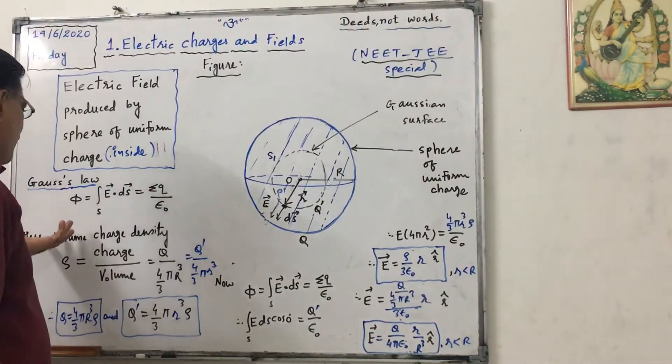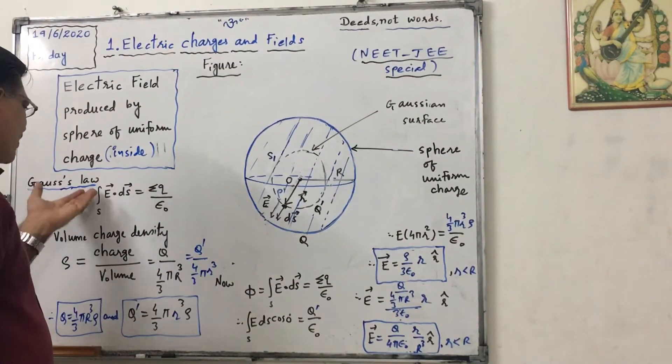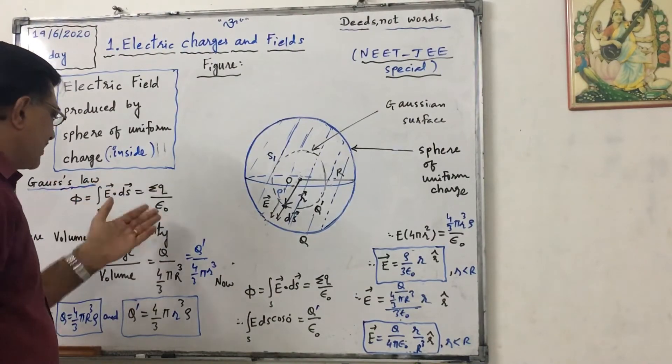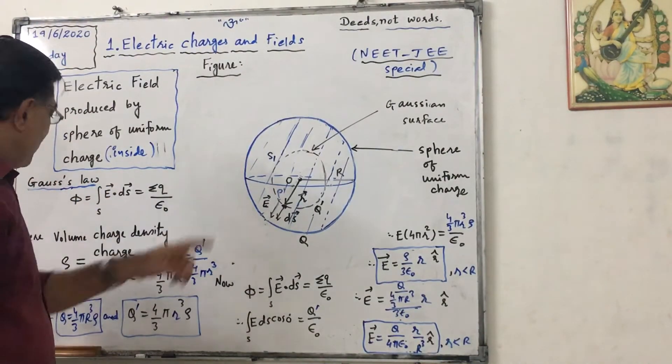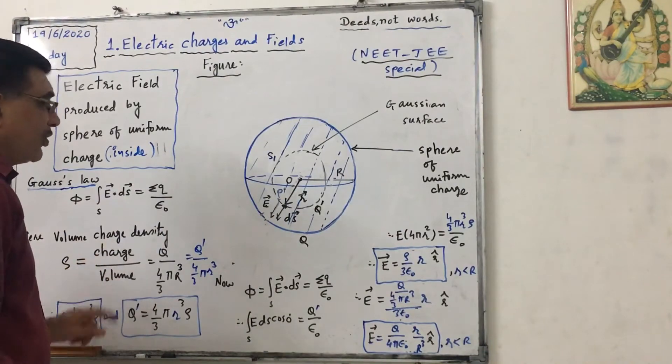Now this is Gauss's law: phi equals to surface integration vector E dot vector ds equals to q upon epsilon naught. Here, volume charge density rho equals to charge upon volume.